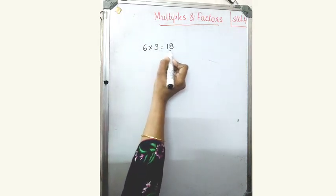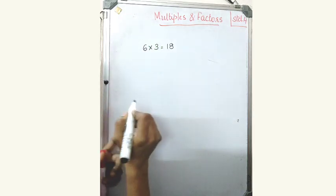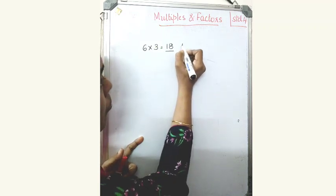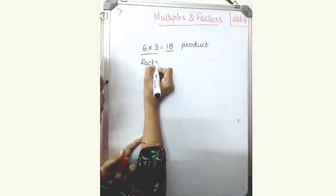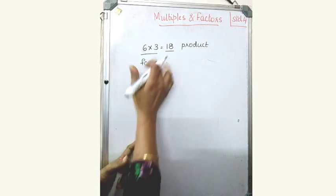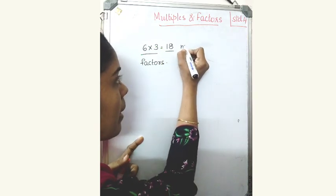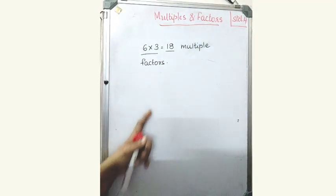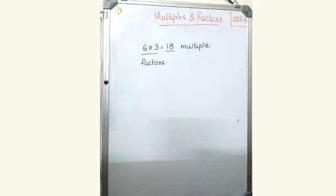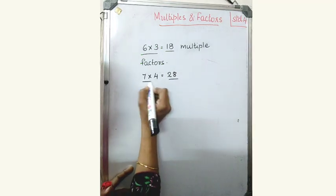Look at this number: 6 into 3 equal to 18. Here, while studying multiplication, I already told you this is the product and these are the factors. Now I am telling you this is the multiple. This is the multiple and these are the factors. Look at this number: 7 fours are 28. This is the multiple and these are the factors.